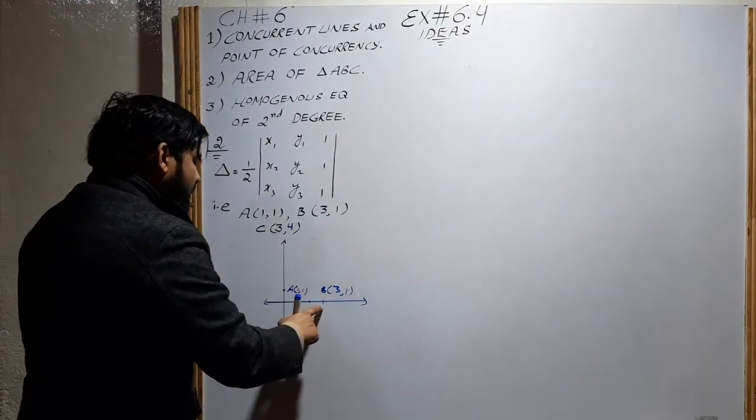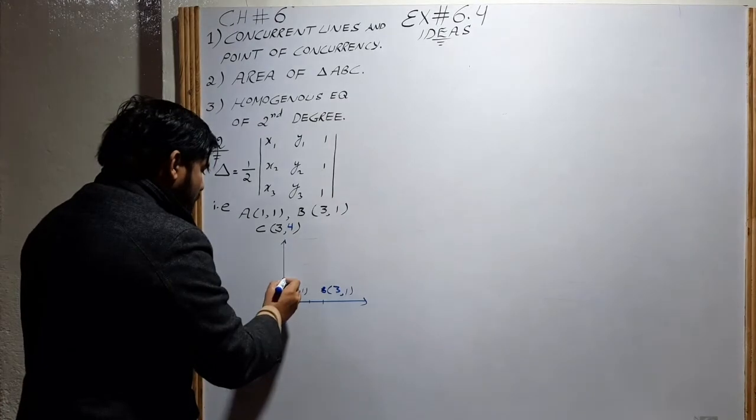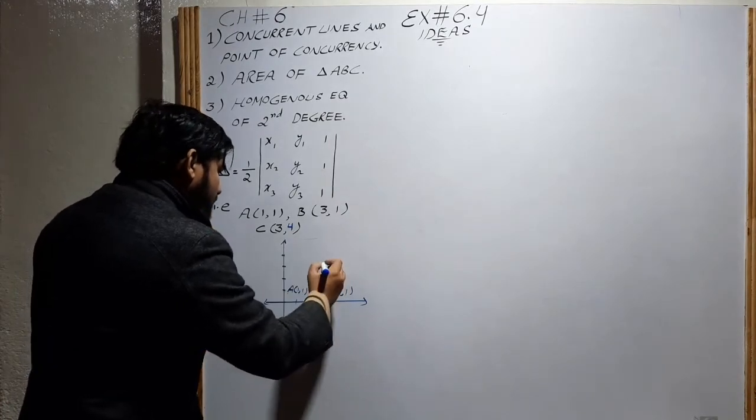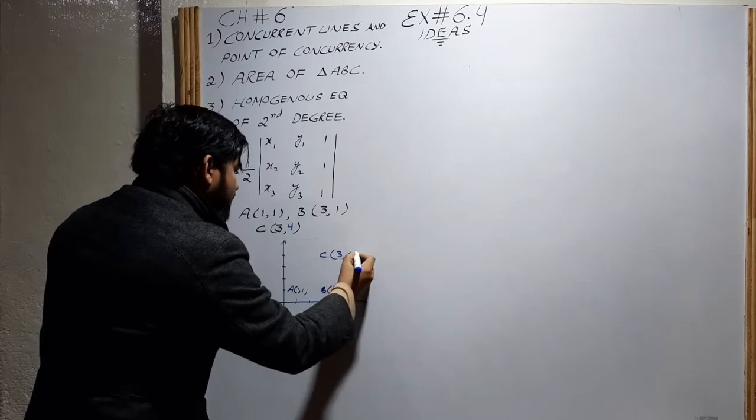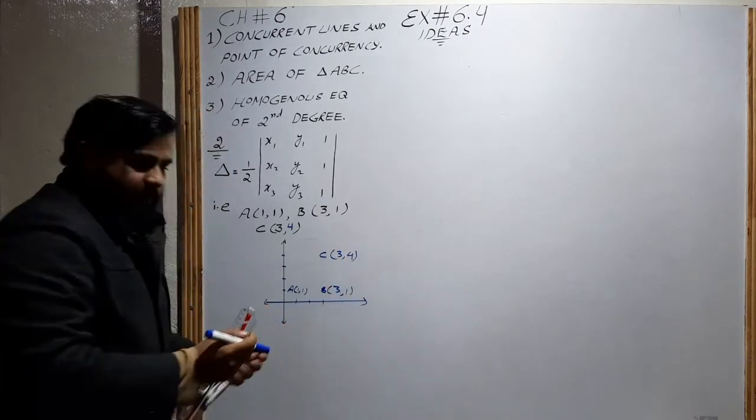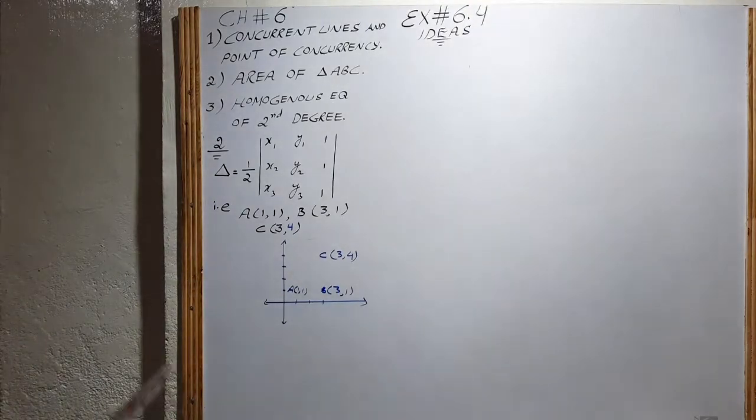There is point C at (3,4). So join all these points and we have our triangle.